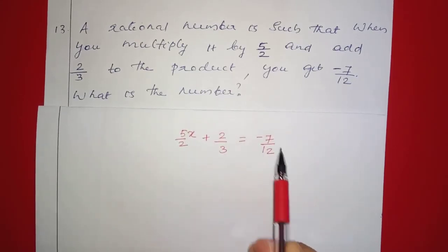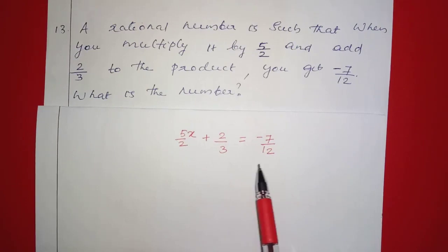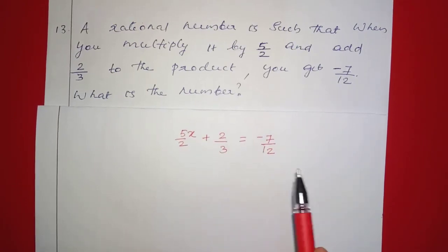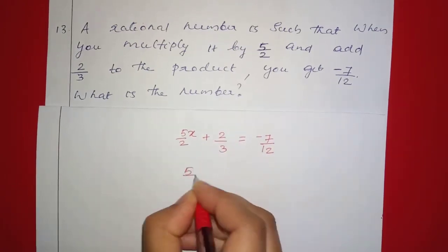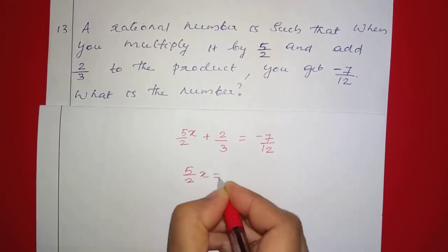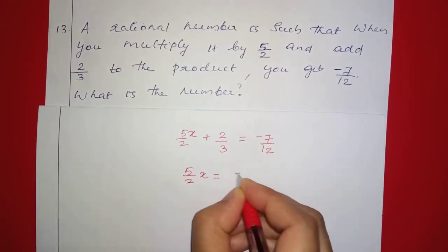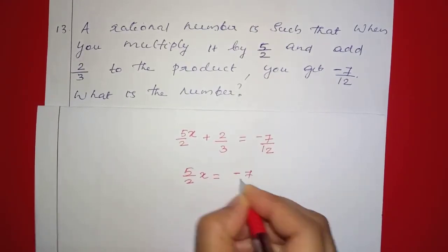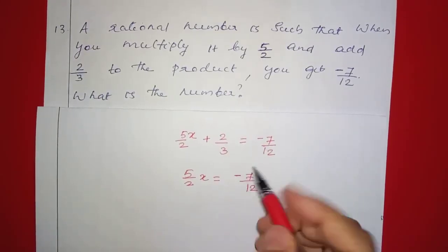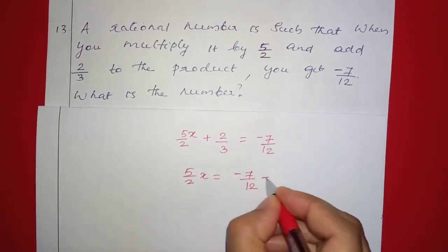Now we have negative 7/12. If we form a linear equation, we have x. So 5/2 times x is equal to negative 7/12, and then we subtract 2/3.